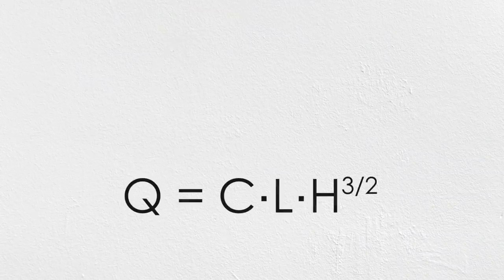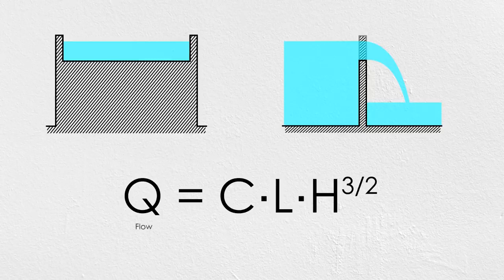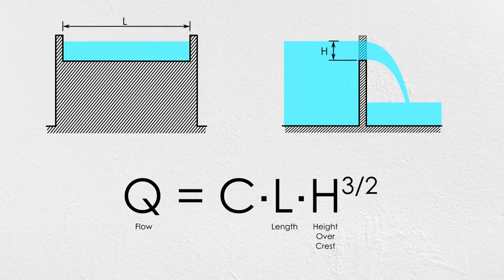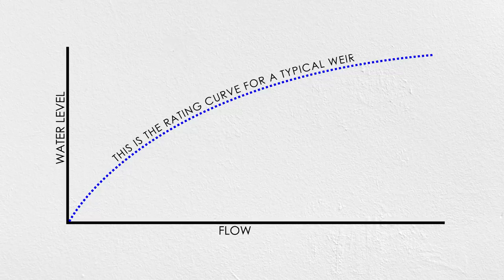This is the equation for flow over a weir. We're not going to do any calculations here, but it's important to know the factors that govern the performance of our hydraulic structure. This equation says that the amount of flow that passes over a weir depends on three factors: the length of the weir, the height of the water level above the crest of the weir, and a coefficient which changes depending on the geometry of the weir. The graph of a hydraulic structure's flow versus water level is called its rating curve, and this is the rating curve for a typical weir.